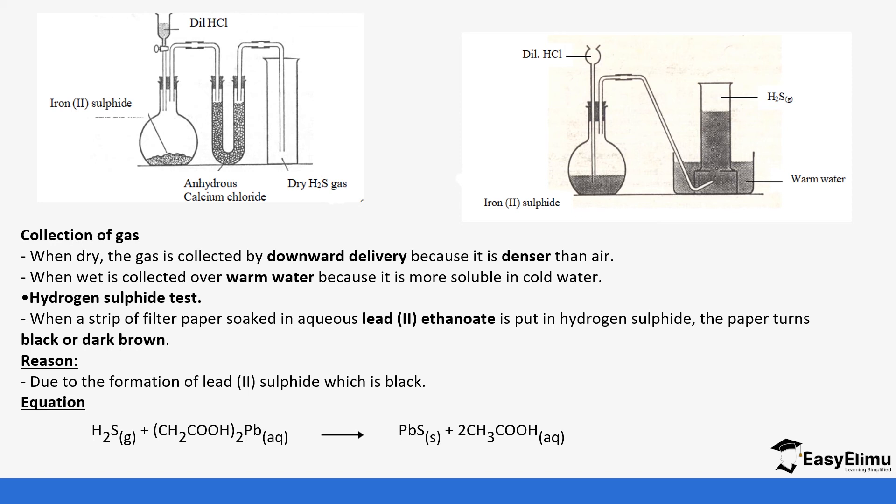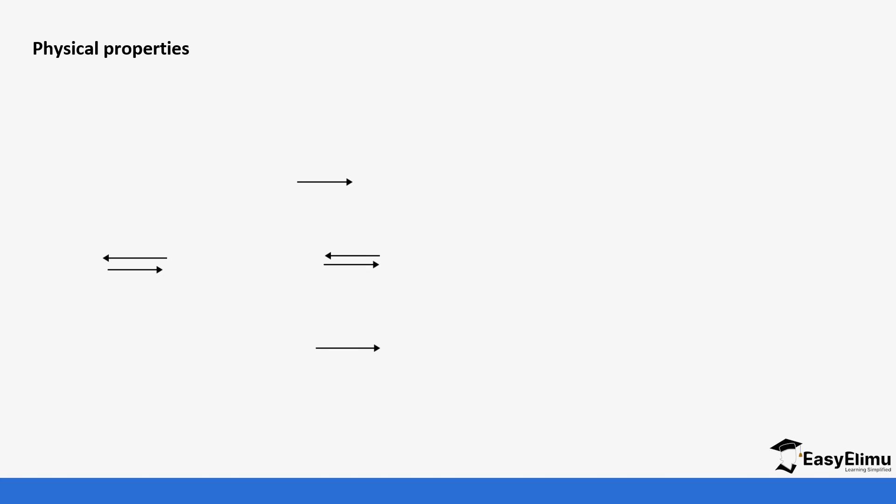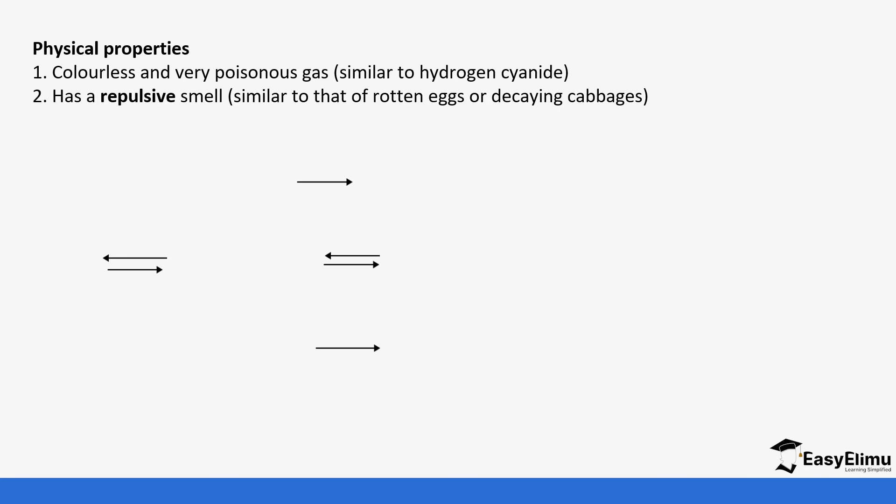Some physical properties of hydrogen sulfide: it is a colorless gas but very poisonous with similar toxicity to hydrogen cyanide. It has a very repulsive smell similar to that of rotten eggs or decaying cabbage.